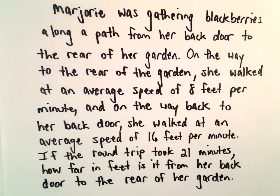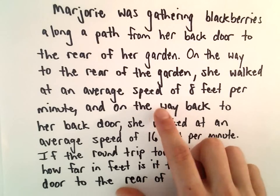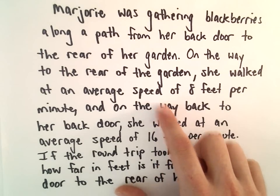Okay, so another word problem here involving distance, rate, and time. Our friend Marjorie, she's gathering blackberries along a path from her back door to the rear of her garden. On the way to the rear of the garden, she's taking her time gathering them, and she's going at an average speed of 8 feet per minute.